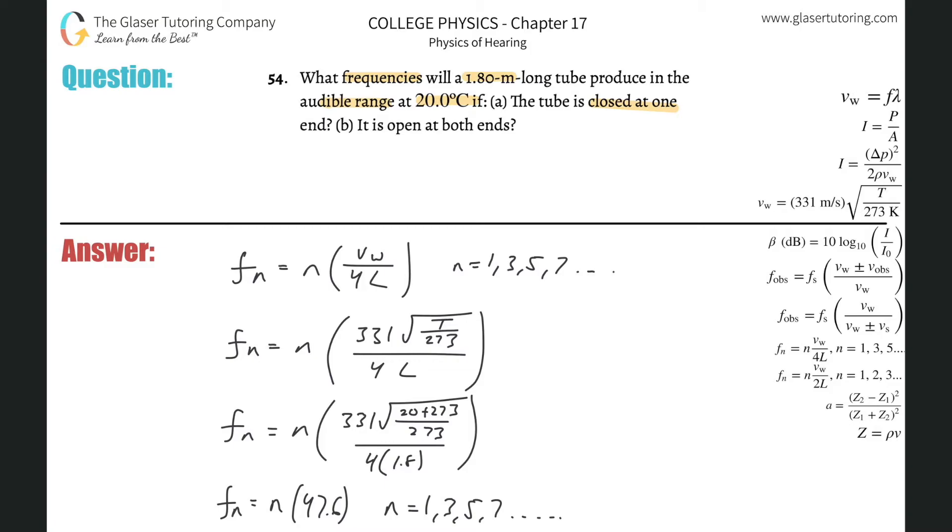So basically what I can do is solve this for n now. So I can plug in 20,000 since that's the max, n times 47.6, solve this thing for n, so 20,000 divided by that value. So this is about 419, right? 419.9.